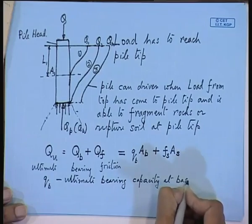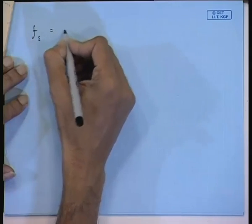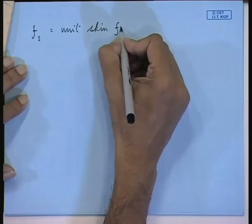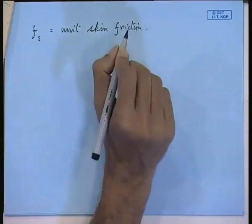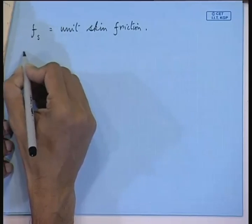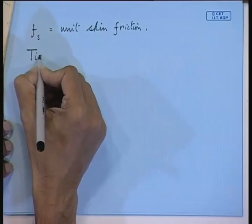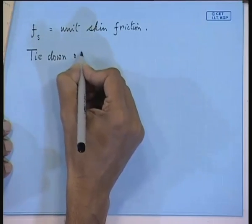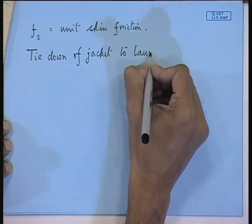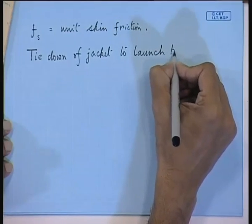All these things you come across, and this is just the starting point of pile mechanics. Unit skin friction F_s is per unit area. After this, the other aspect is the tie-down mechanism during transportation — this is called the tie-down of the jacket to the launch barge.